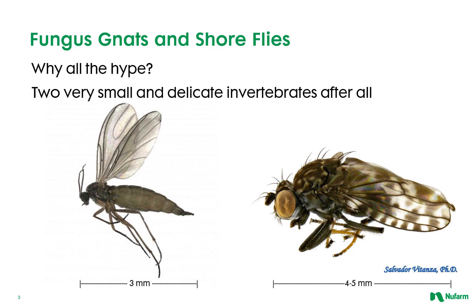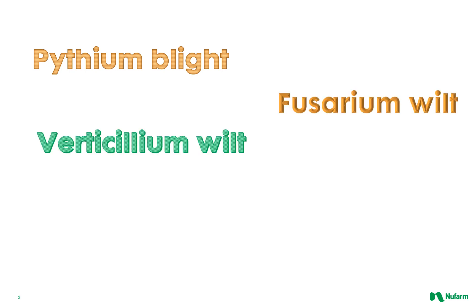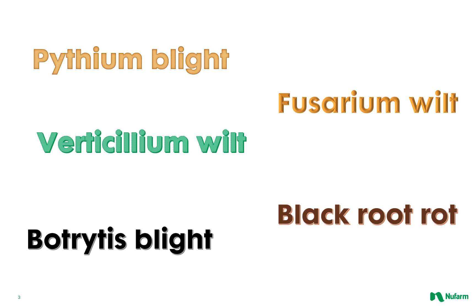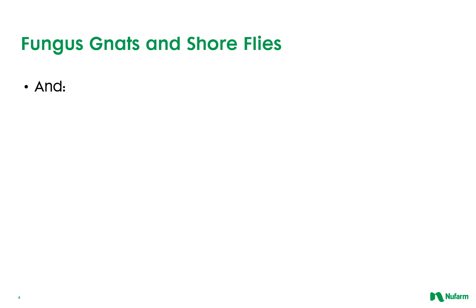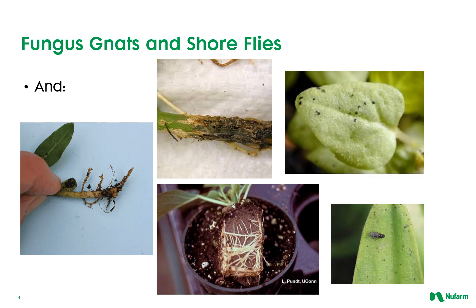So really, what's the big deal with these two diminutive and delicate invertebrates? Well, not so fast. These pests have been implicated in possibly spreading such greenhouse diseases as Pythium blight, Fusarium wilt, Verticillium wilt, Black root rot, and even Botrytis blight. In addition, there is direct damage caused by fungus gnat larvae feeding on plant roots, and some unappealing shore fly droppings on plant leaves.